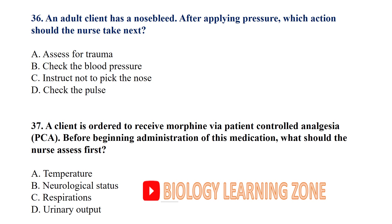An adult client has a nosebleed. After applying pressure, which action should the nurse take next? Check the blood pressure. A client is ordered to receive morphine via patient-controlled analgesia. Before beginning administration, what should the nurse assess first? Respiration.